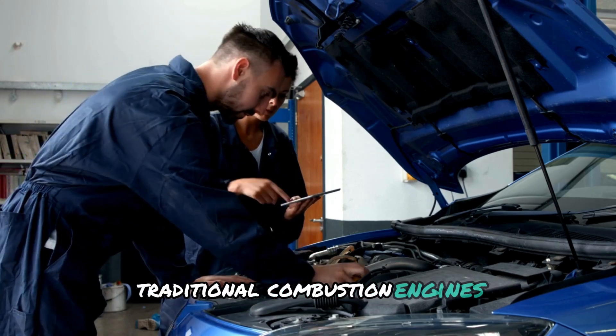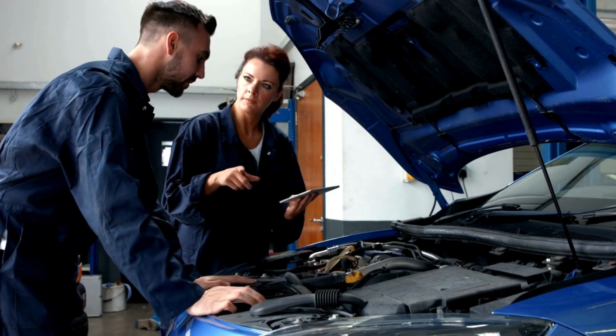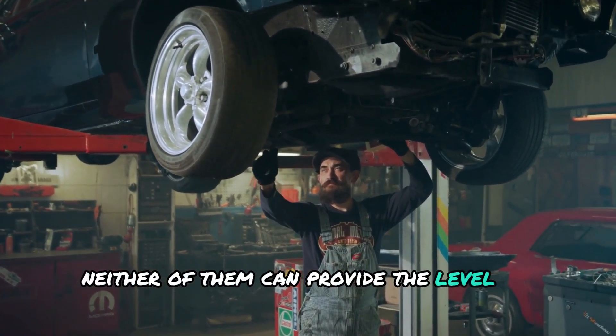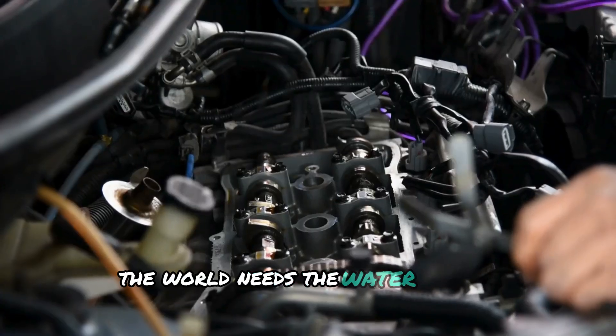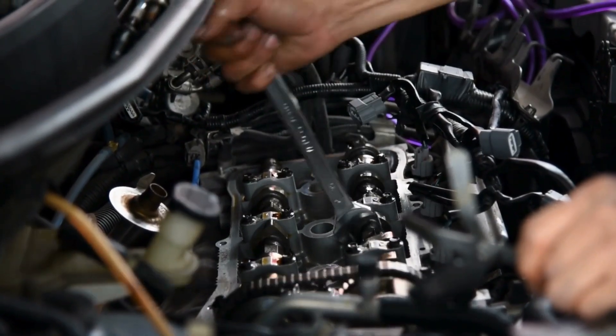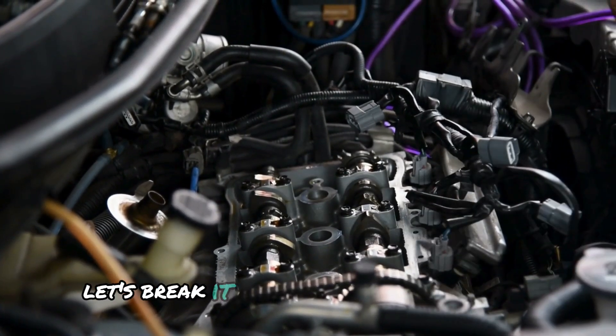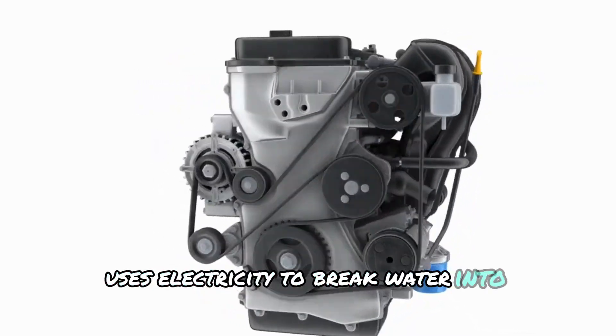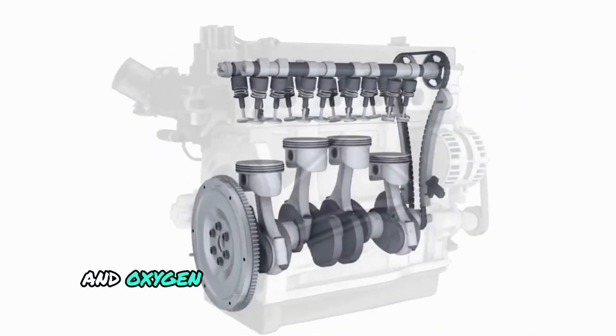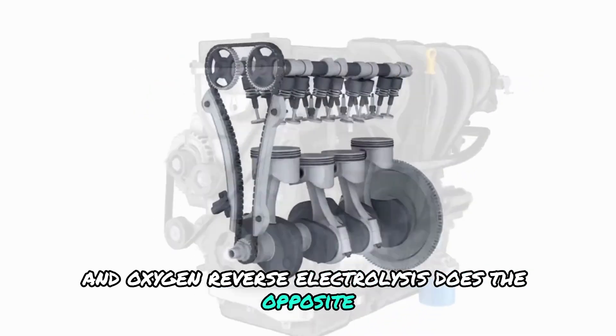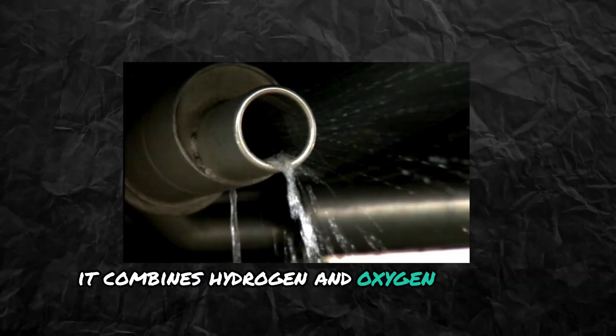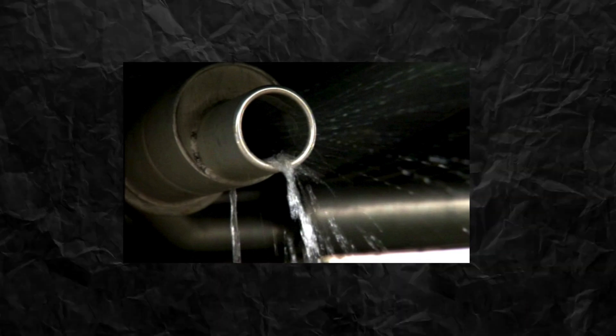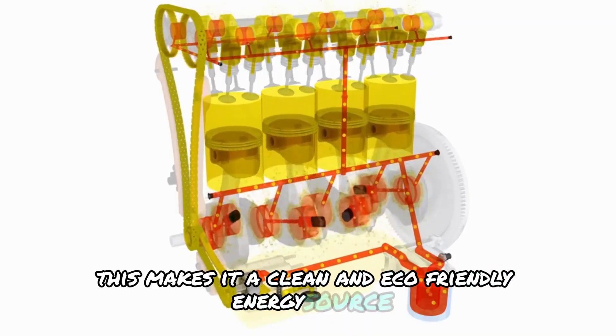Traditional combustion engines rely on fossil fuels, while electric models run on batteries. Neither of them can provide the level of clean energy the world needs. The water engine employs a process known as reverse electrolysis. Let's break it down. Ordinary electrolysis uses electricity to break water into hydrogen and oxygen. Reverse electrolysis does the opposite. It combines hydrogen and oxygen to make electricity, with water vapor as the only by-product. This makes it a clean and eco-friendly energy source.